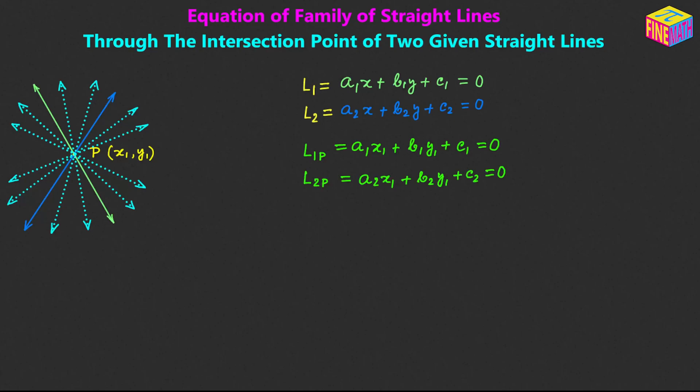Now let's assign a number to each of these four equations. Since we are trying to derive the equation of a family of straight lines, that equation should represent a whole bunch of straight lines. Ultimately it will be a linear equation. We have been given two linear equations and from those parameters we have to come up with a generic linear equation — using clever sums, not products.